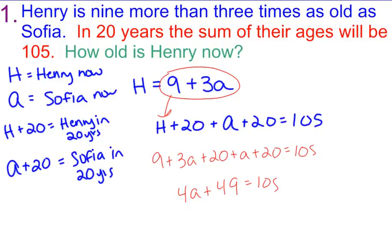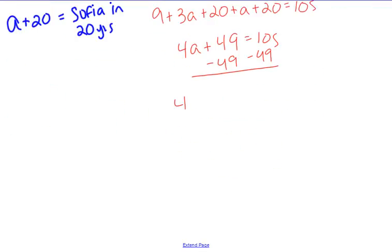So now I'm going to minus 49 from both sides. Look at here. I have 4A equals 56. Divide by 4. And that means Sophia's age right now is 14.